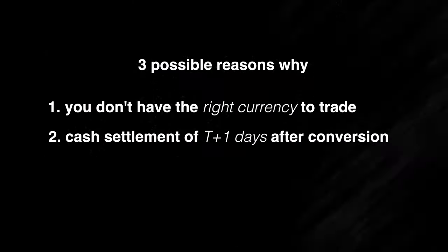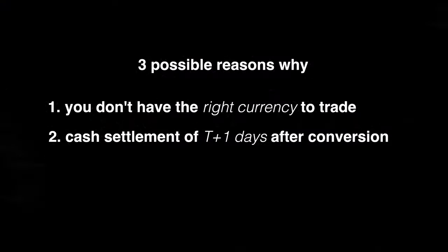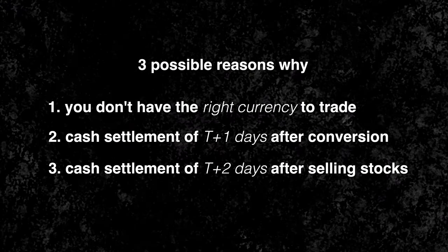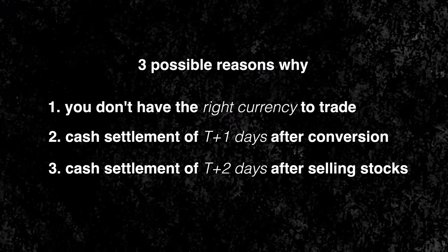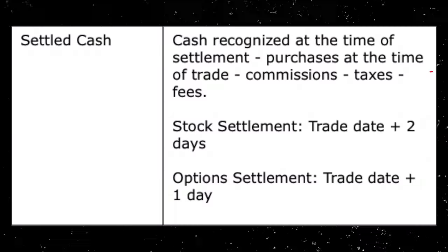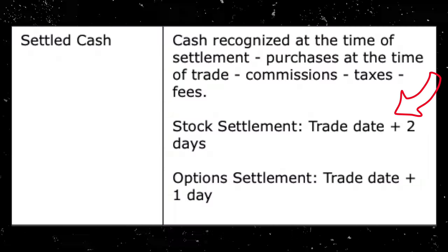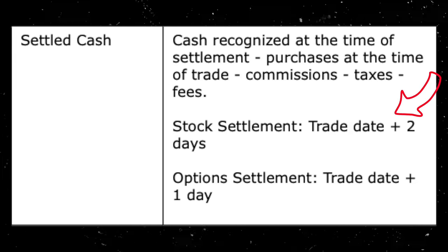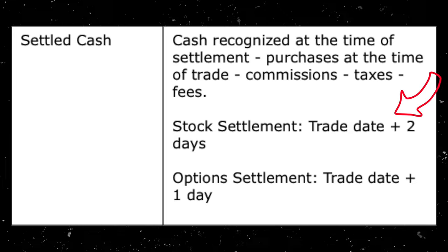Second, even after you have converted, there is a cash settlement of T plus one day. What that means is you need to wait one day before you can use your freshly converted US dollar cash to start trading in the US market. The third possible reason is that you just funded your account or just sold some of your stocks. Keep in mind that your cash will have a settlement period of T plus two days for a cash account. So you need to wait two days after selling your stocks before you can start reusing that money to buy something else or to withdraw.